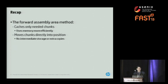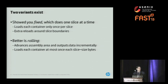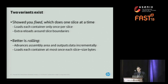To recap: the forward assembly area method caches only needed chunks, so it uses memory more efficiently than LRU. It moves chunks directly into position, so there's no intermediate storage or extra copies. We have two variants. The one I've just shown is called 'fixed' — it does one slice at a time, is simpler, and loads each container only once per slice. The forward assembly area can be much bigger than a chunk container, allowing considerable reuse. The alternative variant, 'rolling,' overcomes a drawback of fixed: if a container is used at the end of one slice and the beginning of the next, fixed would reload it. Rolling improves upon this by advancing the assembly area and outputting data incrementally, loading each container at most once per slice-size bytes (100 megabytes here).